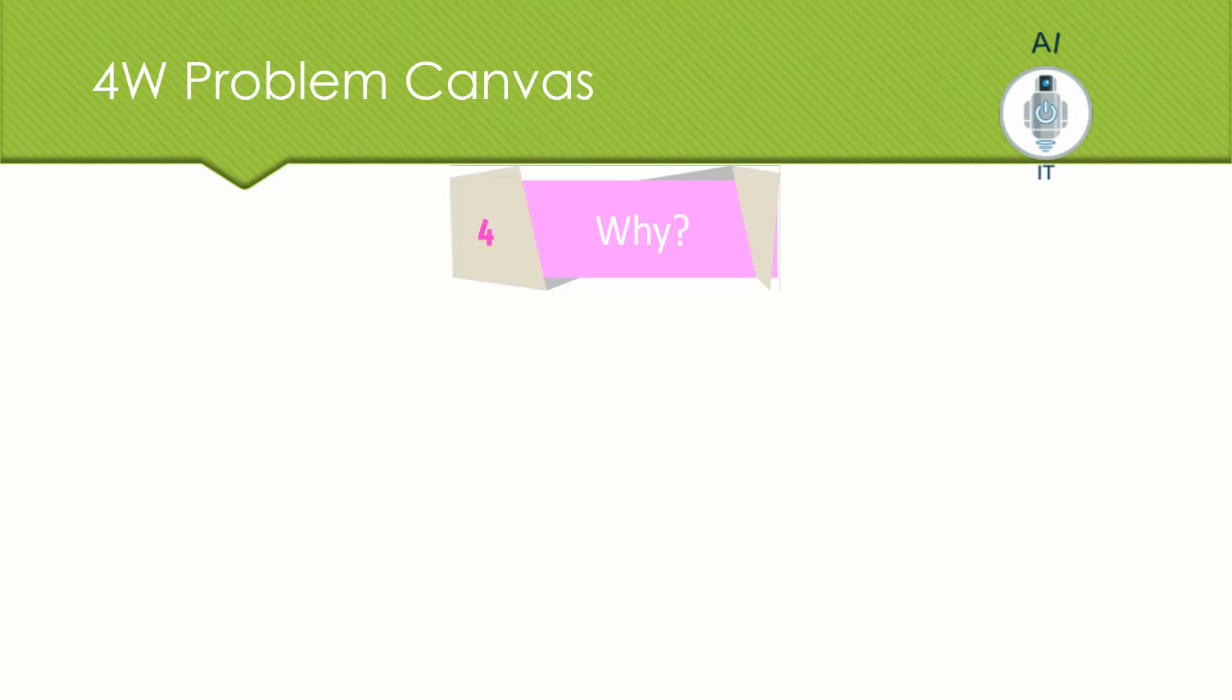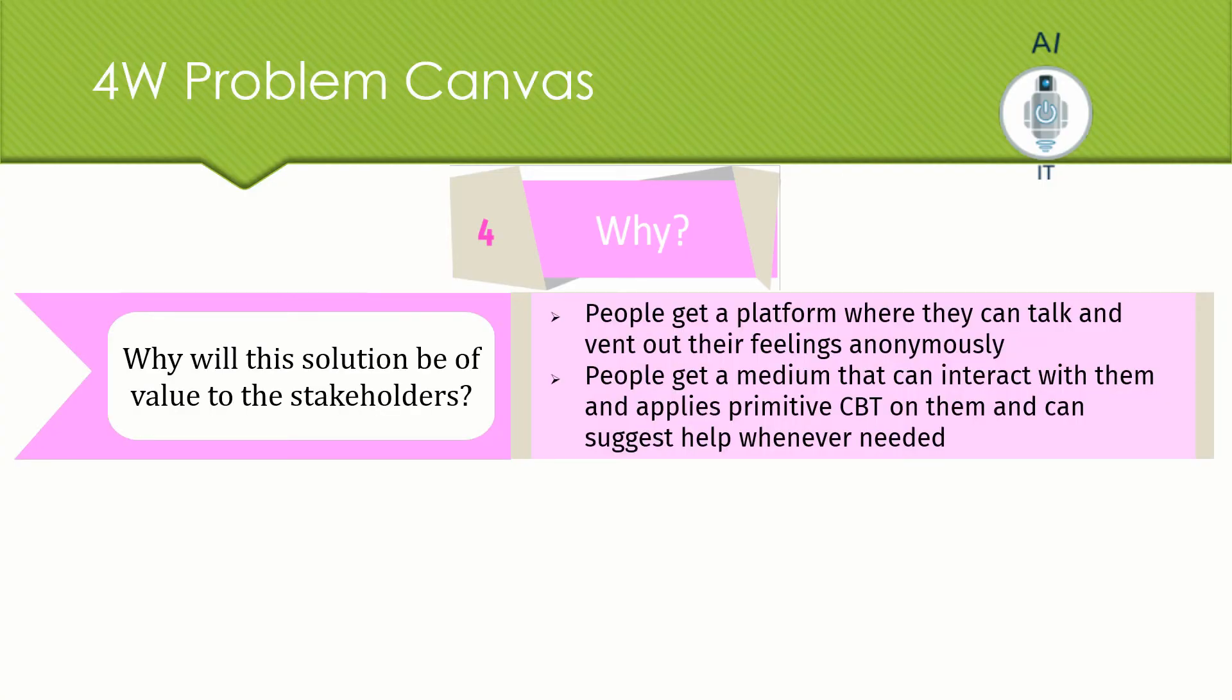The last or the fourth block that we are going to look into is the WHY block. Here, what is the value that the stakeholders would receive if they have a solution for this problem? People get a platform where they can talk and vent out their feelings anonymously. If you don't know the person whom you are talking to but you are confident that they are not going to share your problems with anyone else, you definitely start venting out your feelings and this particular solution that we would be coming up can act as a medium that can interact with them and it also applies the primitive cognitive behavioral therapy to take out the negative emotions at a very basic level and can help them as and when they feel depressed or stressed out by giving some suggestions.